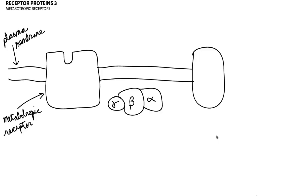You can already see by looking at the picture that there are some differences between the two receptor types. In both types, we have a receptor protein, and the binding site also exists on both. The difference comes in this particular structure down here, and this other protein that's also embedded in the plasma membrane. Just like with an ionotropic receptor, we have a neurotransmitter that will be released by the presynaptic neuron, and then it will cross the synapse and bind with the binding site on the receptor protein.